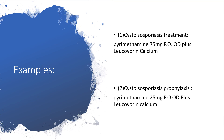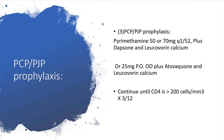Examples of where pyrimethamine is useful: in cystoisosporiasis treatment, we give pyrimethamine 75 mg once daily with leucovorin. In cystoisosporiasis prophylaxis, pyrimethamine 25 mg once daily with leucovorin. In Pneumocystis jirovecii pneumonia prophylaxis, you can use pyrimethamine 50 or 75 mg every week with dapsone and leucovorin.